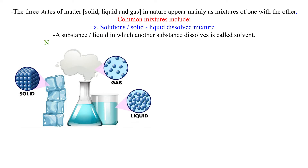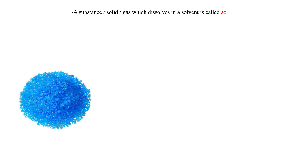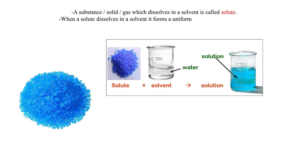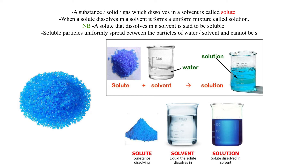Water is referred to as the universal solvent because it dissolves many solutes. A substance — solid or gas — which dissolves in a solvent is called a solute. When a solute dissolves in a solvent, it forms a uniform mixture called a solution. A solute that dissolves in a solvent is said to be soluble; soluble particles uniformly spread between the particles of water or solvent and cannot be seen.